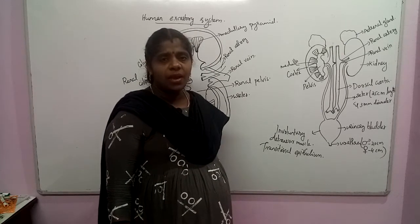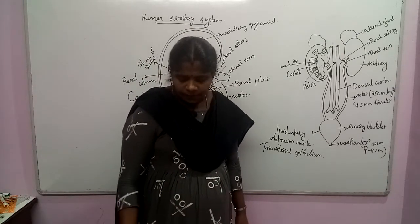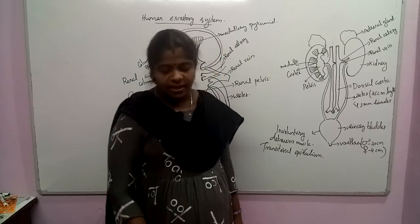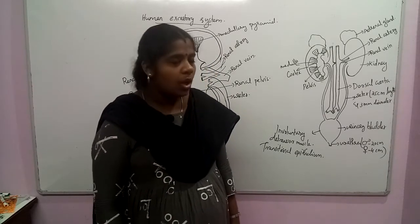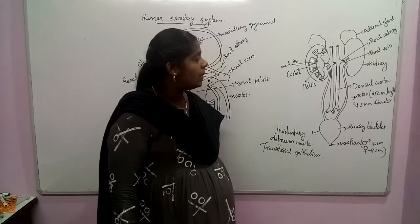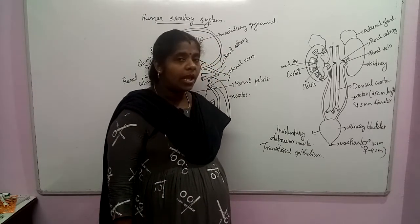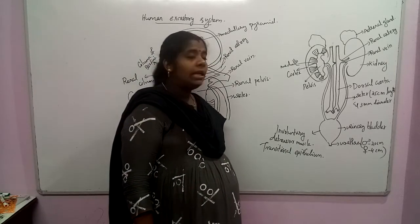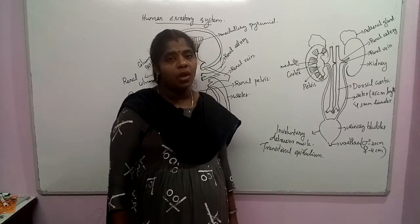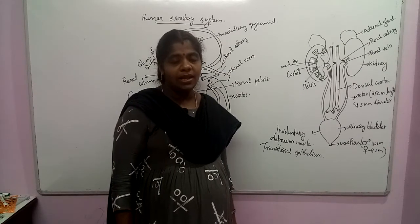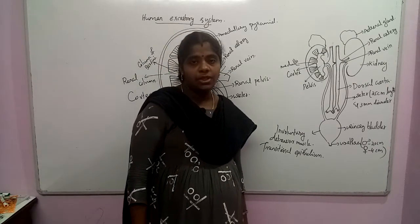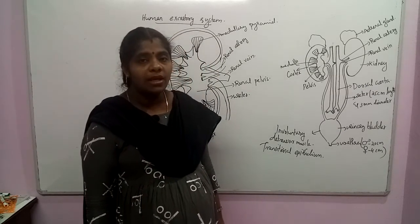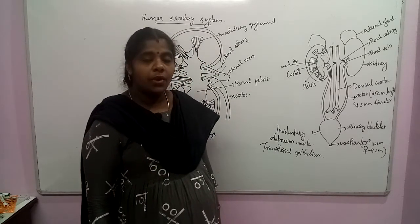This is all about the structure of the excretory system present in humans. The human excretory system has a pair of kidneys, a pair of ureters, and a urinary bladder. The kidney is situated in the dorsal wall of the abdominal cavity, at the exact position of the last thoracic vertebra to the third lumbar vertebra.